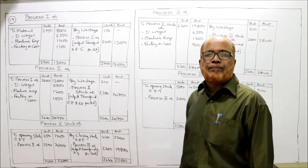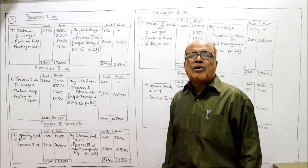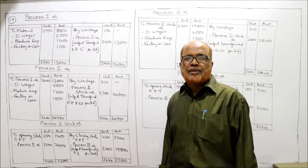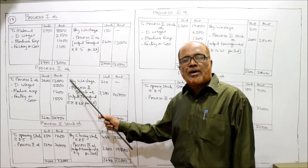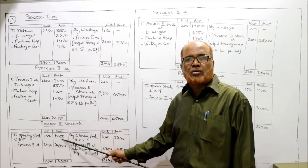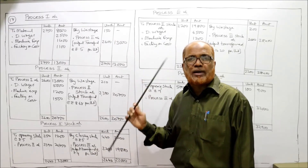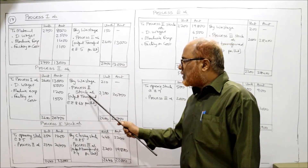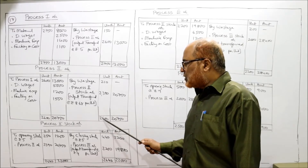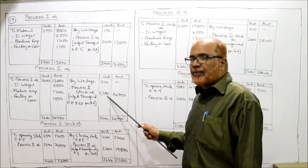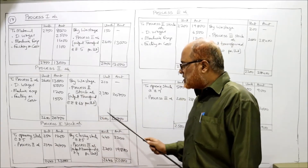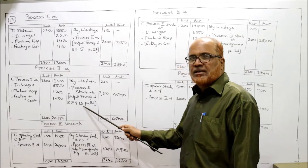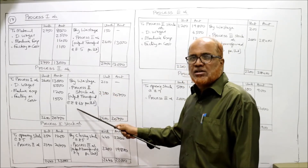The output from process two will not go directly to process three — it will go to the process two stock account, because we are given the opening stock and closing stock of process two. So we are making two accounts: process two account and process two stock account, then process three account and process three stock account. In process two, the output is 2,600 minus 210, which is 2,390 units. The total on the debit side is 20,750. So 20,750 divided by 2,390 gives 8.68 — that is the value of the output in the second process.